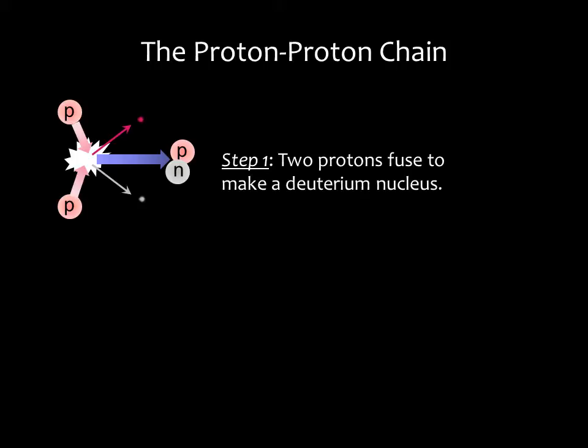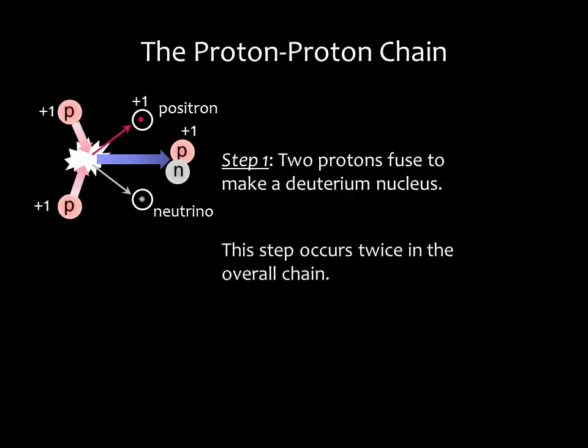In this reaction, a proton is converted into a neutron. The laws of physics say charge must be conserved, so we also get out of the reaction a positively charged particle called a positron. We started with a charge of plus two, and we end up with a charge of plus two. The other particle we get is a neutrino. A neutrino is a subatomic particle with a very tiny mass. Step one occurs twice in the overall chain.